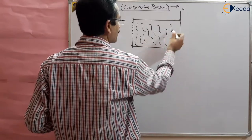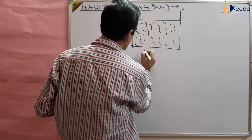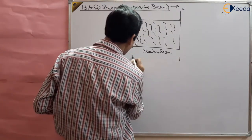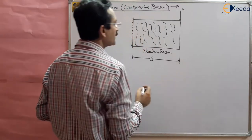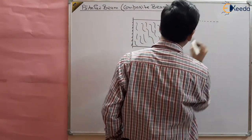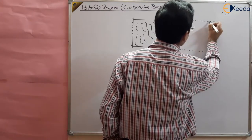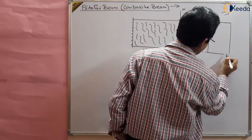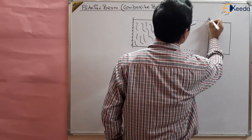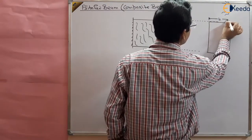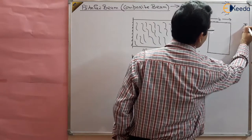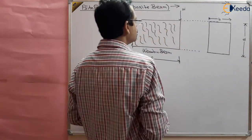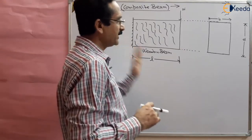You know wooden beams have this type of fibers. This is the wooden beam — this is the length of the beam, and the cross-section will be like this. This wooden beam has width B and depth D. And you know that wood is weak in normal stresses.